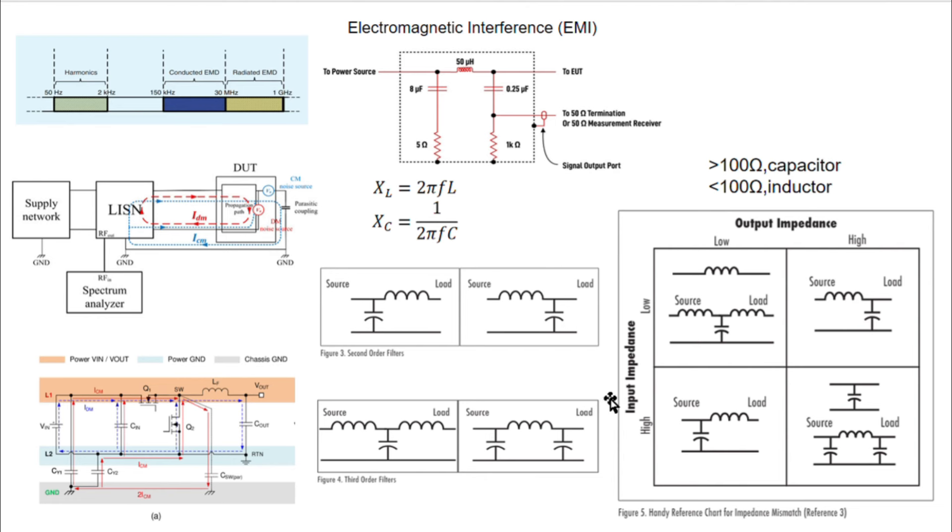Now, how do you determine which configuration to use? Well, one aspect of filter design is impedance mismatch. The first filter element nearest the switching device should provide the highest possible mismatch. Meaning, high-frequency high impedance should match a high-frequency low-element impedance, which is an inductor.